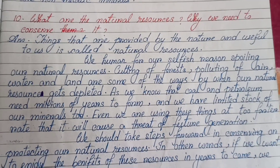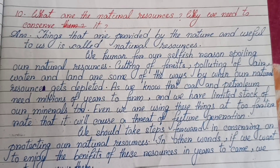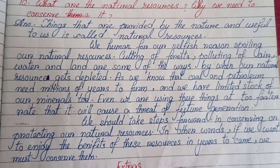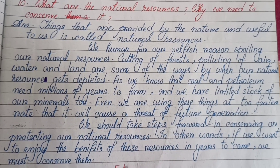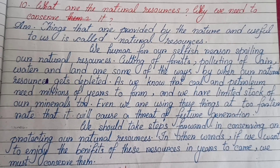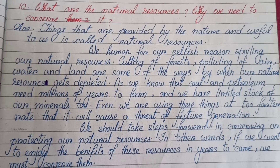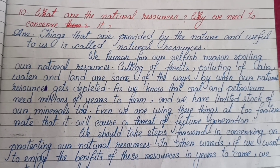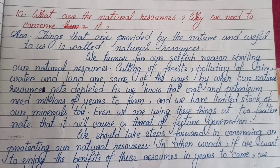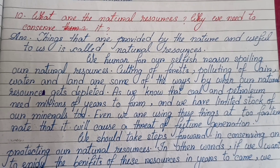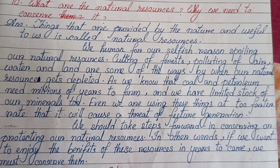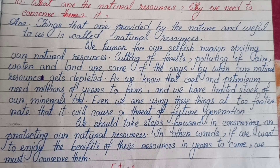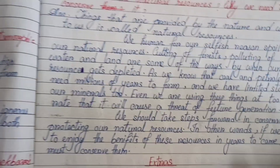Number ten: What are natural resources? Why do we need to conserve them? Things that are provided by nature and useful to us are called natural resources. We humans, for selfish reasons, are spoiling our natural resources — cutting forests, polluting air, water and land are some ways our natural resources get depleted. As we know, coal and petroleum need millions of years to form and we have limited stock of minerals too. We are using these things at too fast a rate, which will cause a threat to future generations. We should take steps to conserve and protect our natural resources so that future generations can also enjoy their benefits.